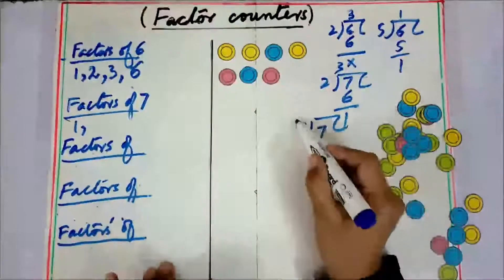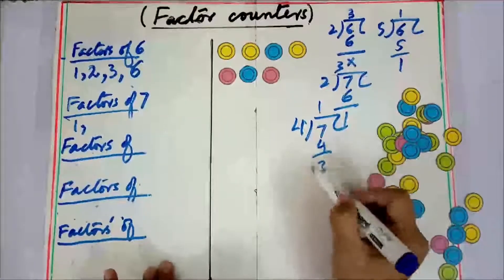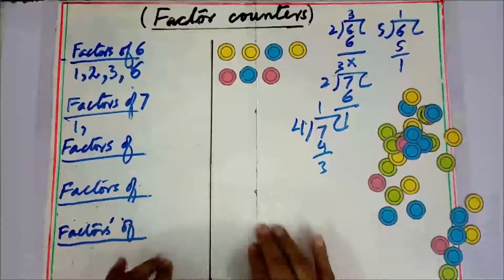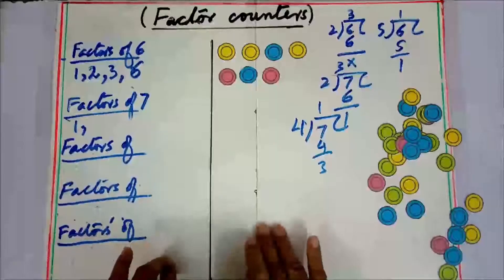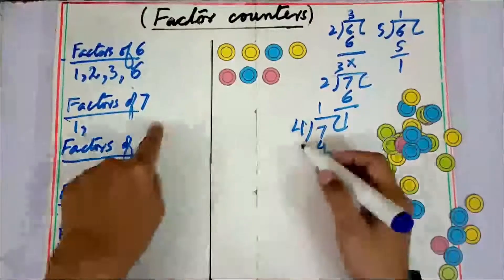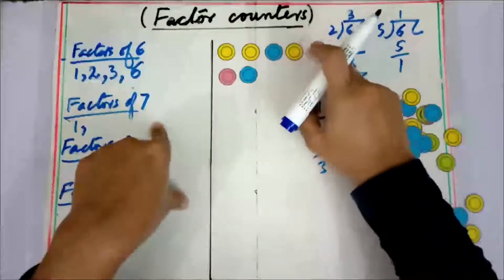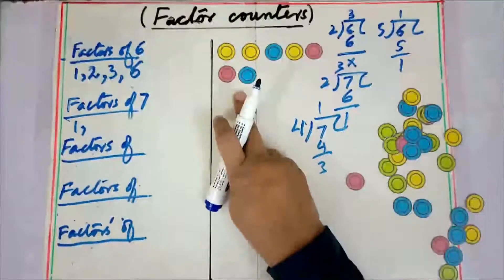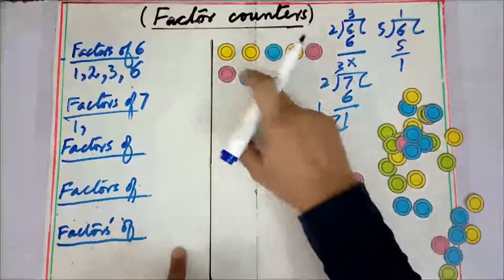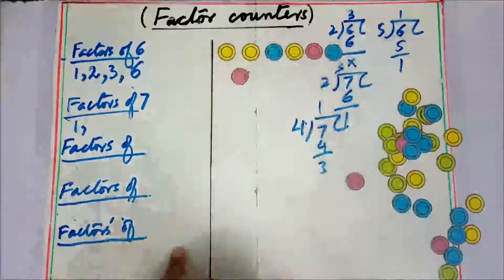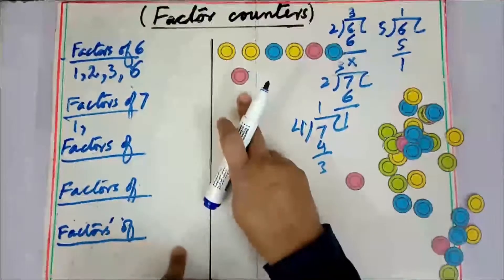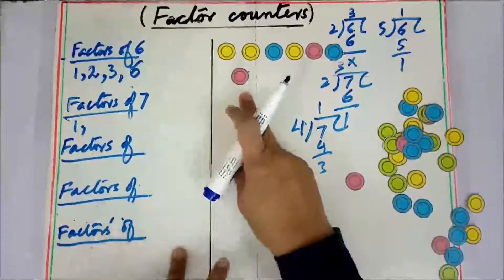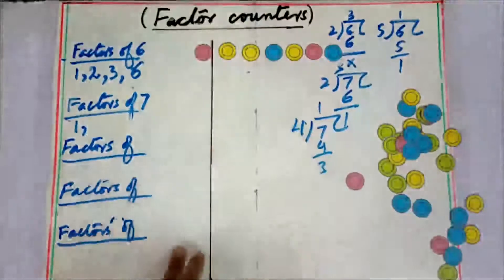For groups of four — there would be three as a remainder, so four is not a factor of seven. This activity helps build a concrete concept for students. For groups of five — there are two as a remainder, so five is not a factor. For six — there is also a remainder, so six is not a factor. For seven — there is one group of seven, so seven is a factor of seven.